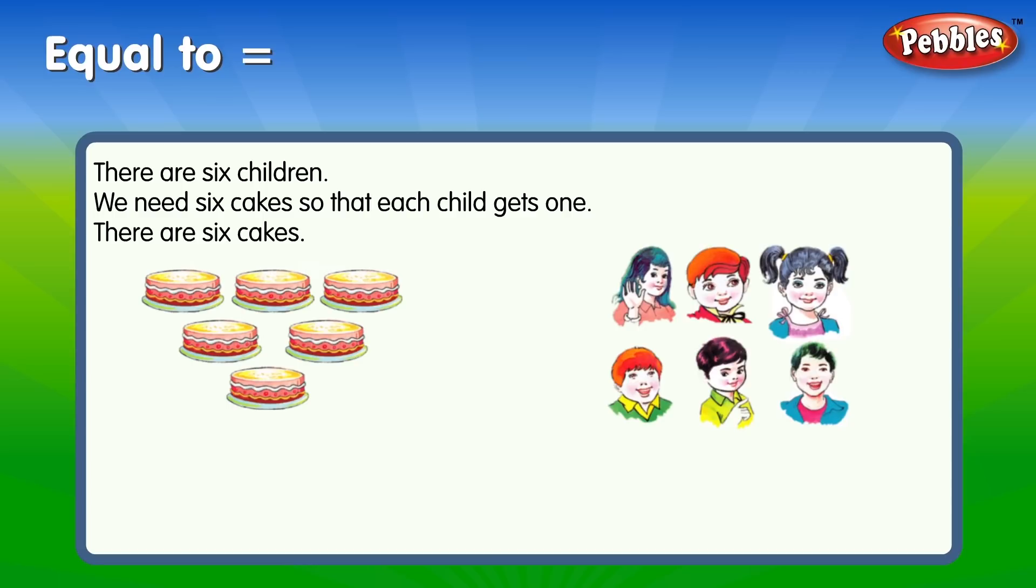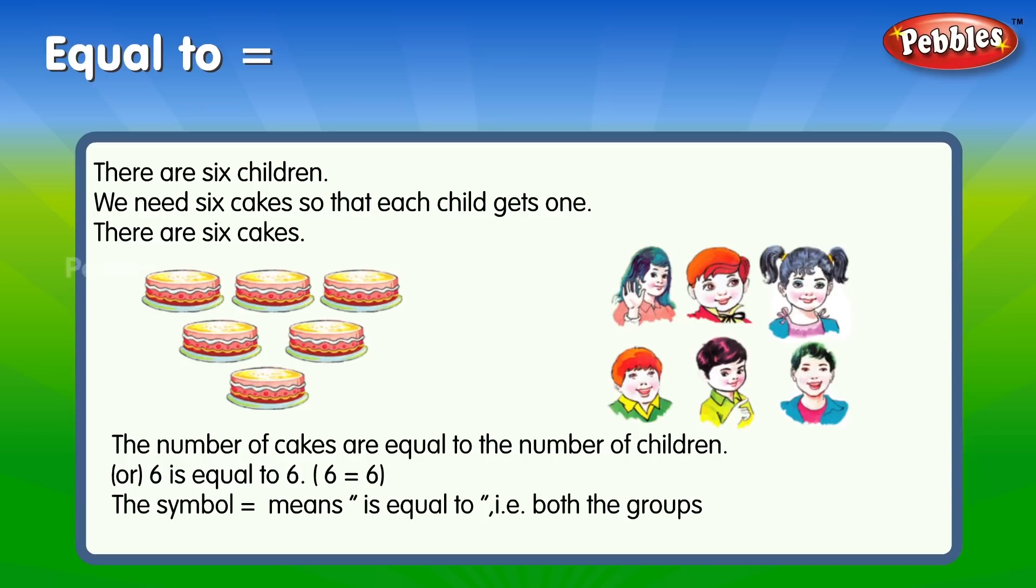There are six cakes. The number of cakes are equal to the number of children. Or six is equal to six. Six equal six. The symbol = means is equal to.